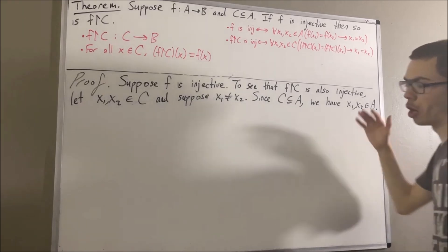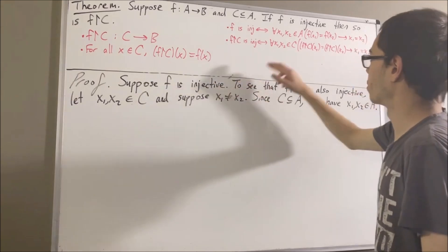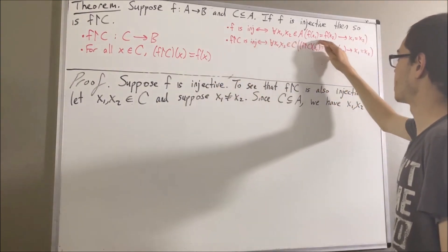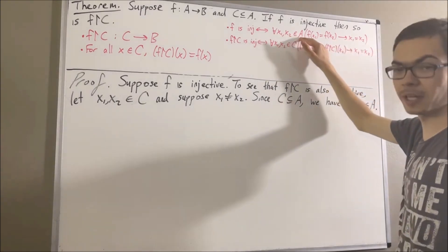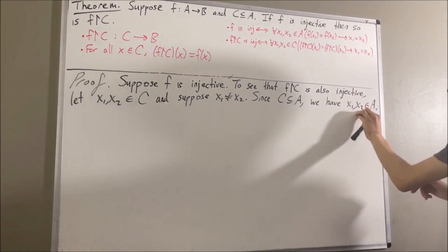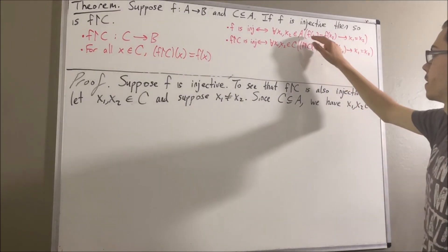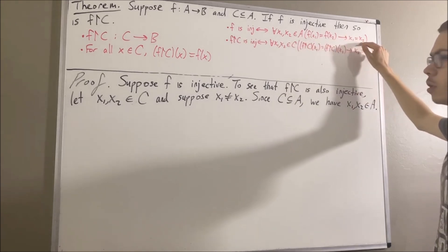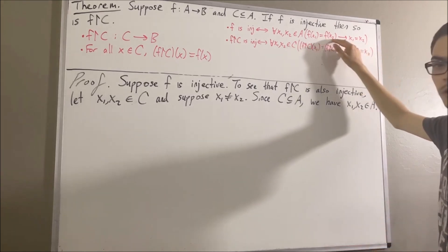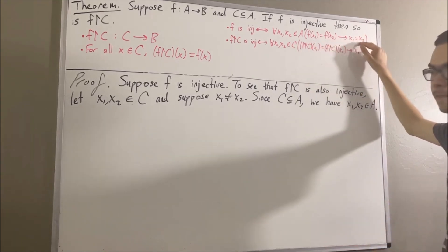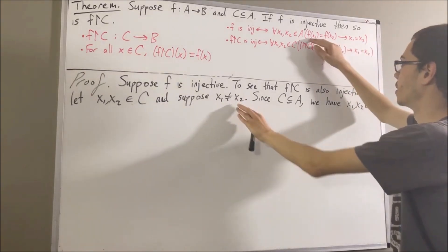And now we're going to apply the fact that f is injective. Because f is injective, we know that for every two elements in A, if f(x1) equals f(x2) then x1 equals x2. This works for the x1 and x2 we have in our proof. So we have that if f(x1) = f(x2), then x1 = x2. By the contrapositive, that means if x1 ≠ x2, then f(x1) ≠ f(x2). And that's exactly what we have — x1 ≠ x2 — so we can conclude that f(x1) ≠ f(x2).